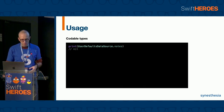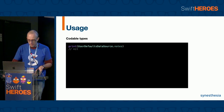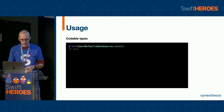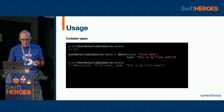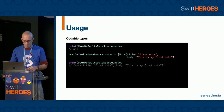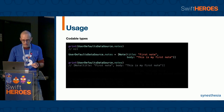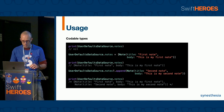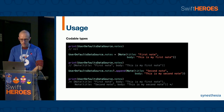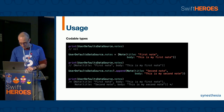It's the same for Codables. At the beginning, notes are nil. We can assign to notes an array with myFirstNote, and then we can append the second note to it. This is very natural code.